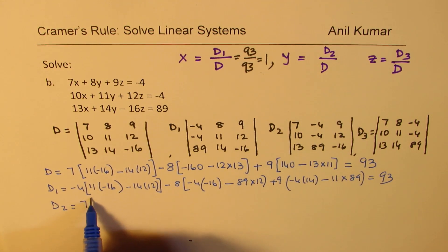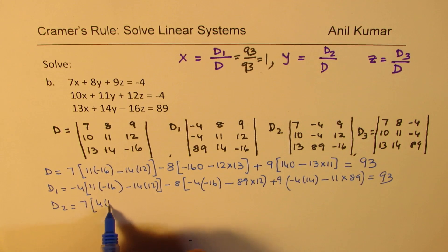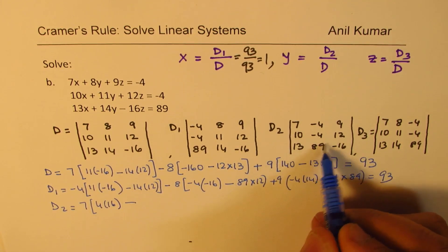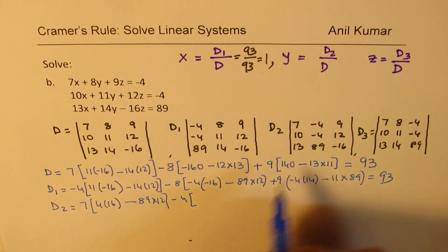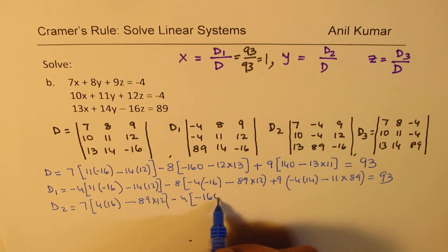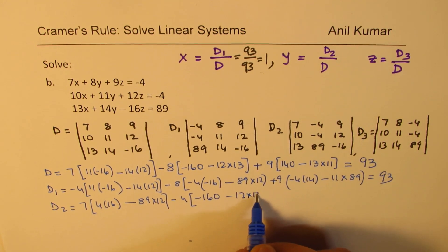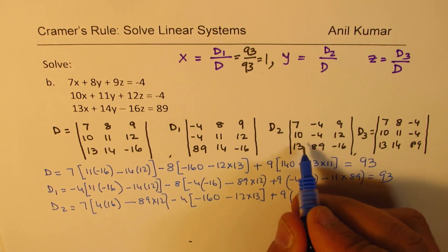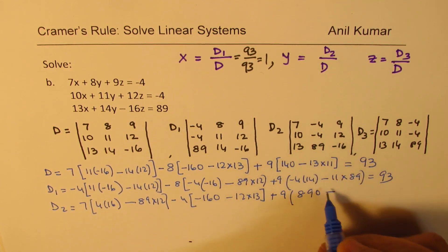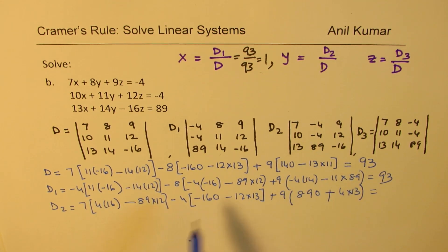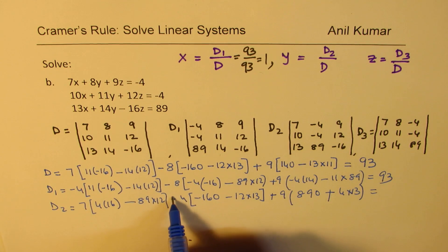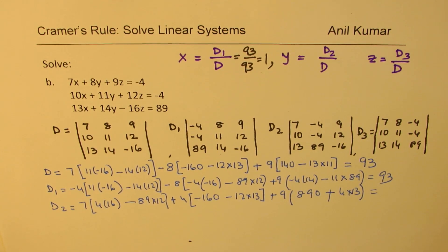So, D2 will be 7 times -4 times 16. So, I'll just write 4 times 16, both positive. And then, 89 times 12. And then, we have, we are calculating D2, -4. And then, 10 times this, which is -160. And then, 12 times 13. And then, we have the third, 9 times. So, 10 times 89 gives me 890 minus, minus minus becomes plus, 4 times 13. So, simplify if you can. So, D2 is, so, 7 times this, that's correct. But here, we made a mistake. This should be minus. And minus and minus makes it plus. So, it is plus 4 times all this. And now, let's calculate.